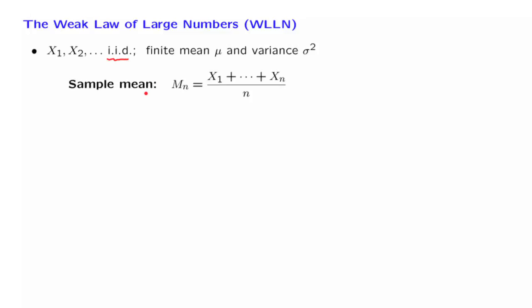Notice that the sample mean is a random variable, because it is a function of random variables. It should be distinguished from the true mean, mu, which is the expected value of the Xi's, which is a number. It is not random. And mu is some kind of average over all the possible outcomes of the random variable Xi.